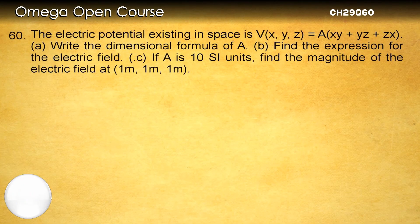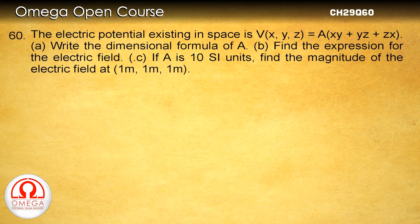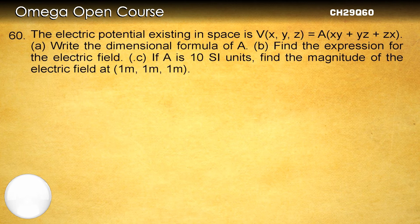The electric potential existing in space is V(x,y,z) equals A(xy plus yz plus zx). Part A: Write the dimensional formula of A. Part B: Find the expression for electric field. Part C: If A is 10 SI units, find the magnitude of the electric field at 1 meter, 1 meter, 1 meter.